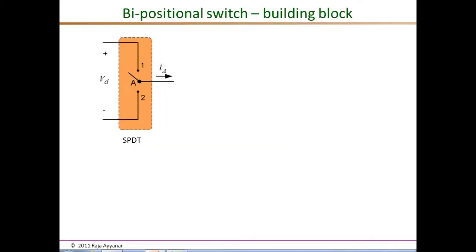The most basic component in most switch mode power converters is the bi-positional switch, which we call the building block. It is essentially a single pole double throw switch, meaning point A can be connected to one of two positions. Point A is connected either to the positive end of the DC voltage or to the negative end of the DC voltage.